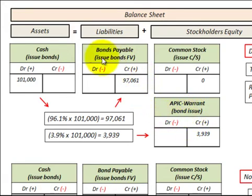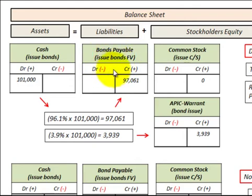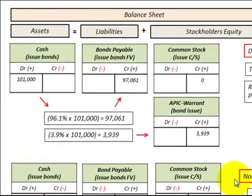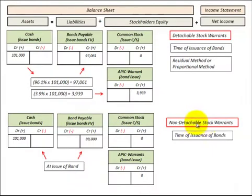The debt portion would be the worth of the bond, what it's worth excluding the equity or the stock warrant.